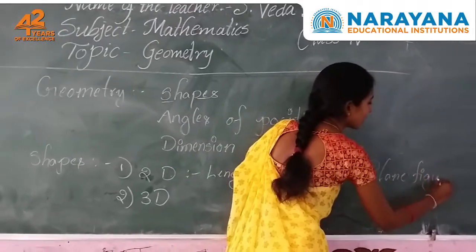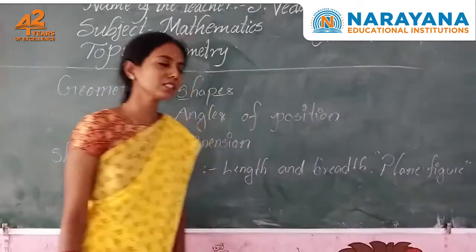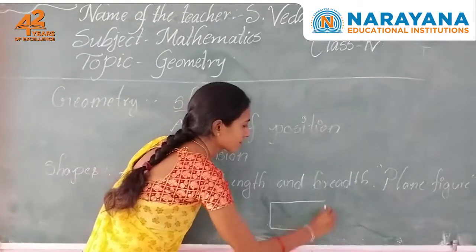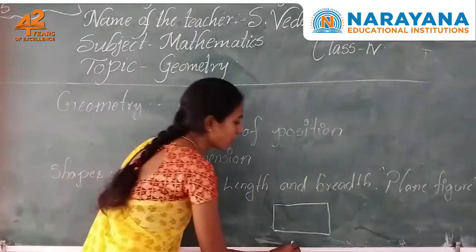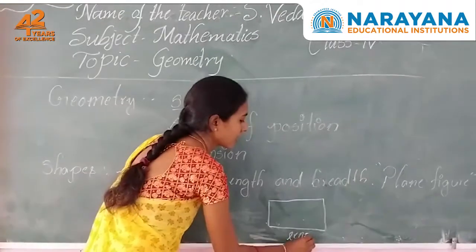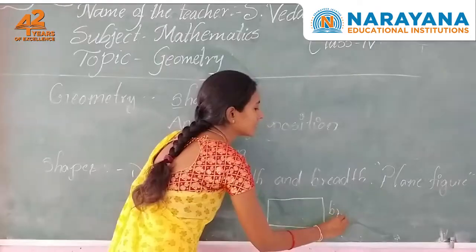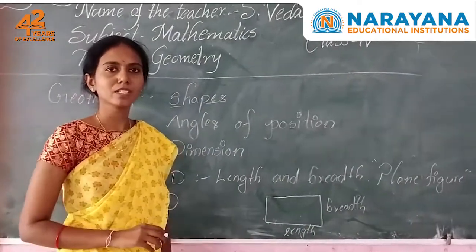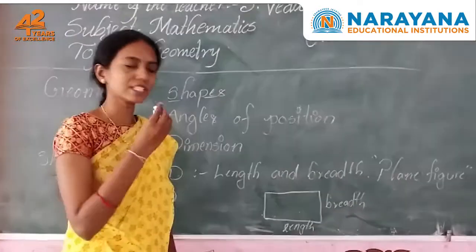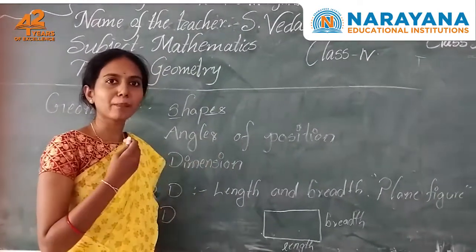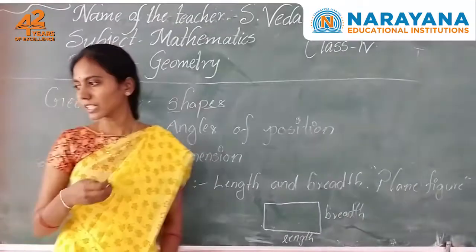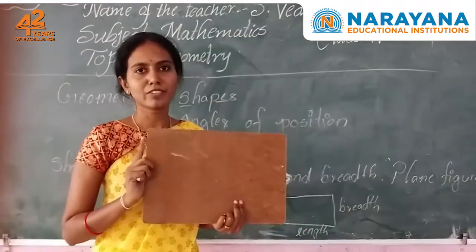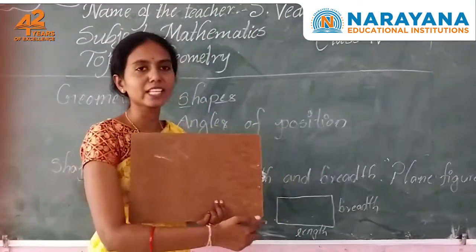You can call it a plane figure — for example, a triangle. You can see this figure; it has only length and width. For example, a paper — we know it as a plane figure because we only know the length and width.